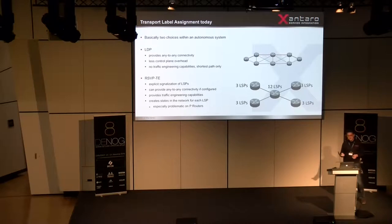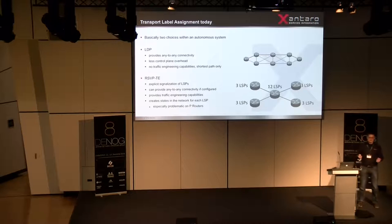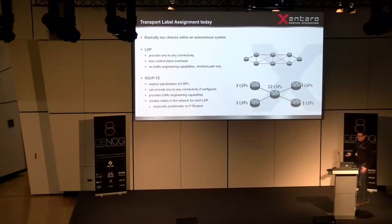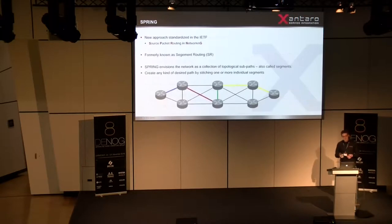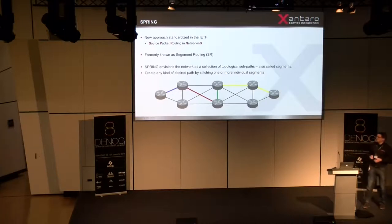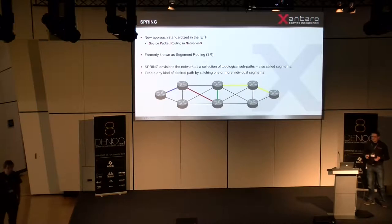If you consider a real network with multiple PE routers and want to run multiple label switch paths between the same pair — for example, one path for premium customers using a short route, and another using underutilized longer-latency links for lower-paying customers — you need to signal a label switch path for each traffic class, which makes the RSVP problem even worse. So if you think about a new solution for transport labels in MPLS, it obviously has to do something better than the existing solutions. This is where Spring comes into play.